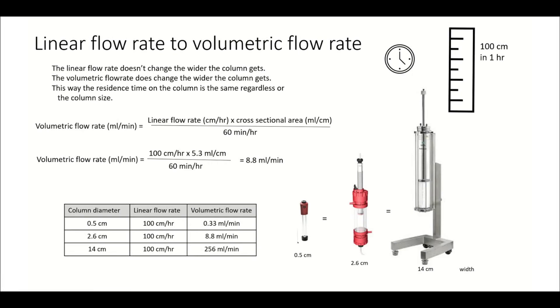All right, so we know the linear flow rate, but we need to convert it to the volumetric flow rate. We do this by multiplying the linear flow rate by the cross-sectional area, or the mils per centimeter of the column, and then dividing that by the total number of minutes in an hour, 60. So for our column, we're going to multiply 100 by 5.3. We figured that out earlier, and we're going to divide it by 60. This ends up being 8.8 mils per minute.